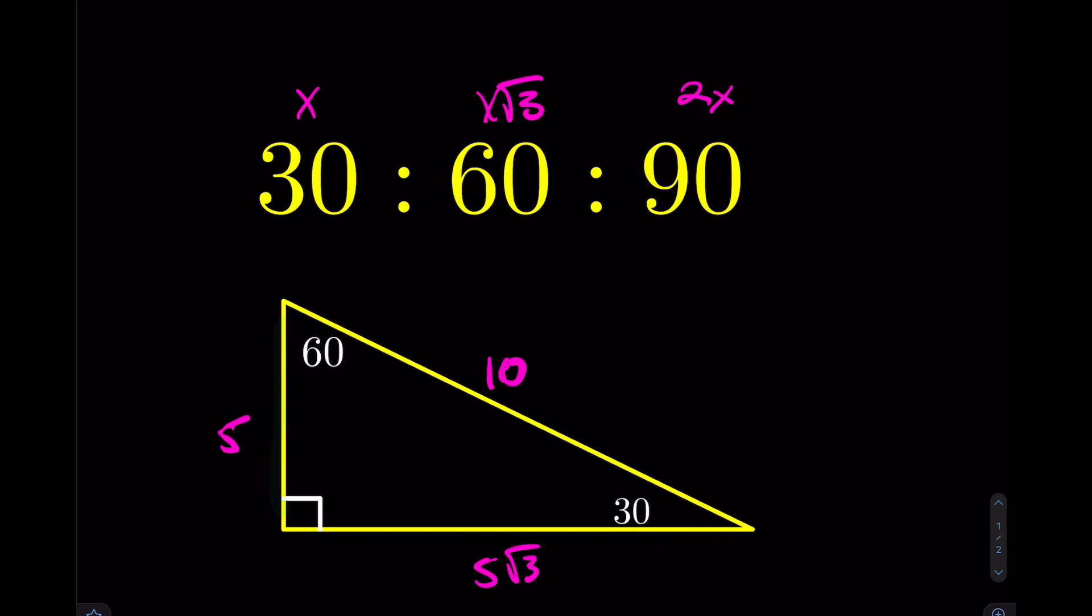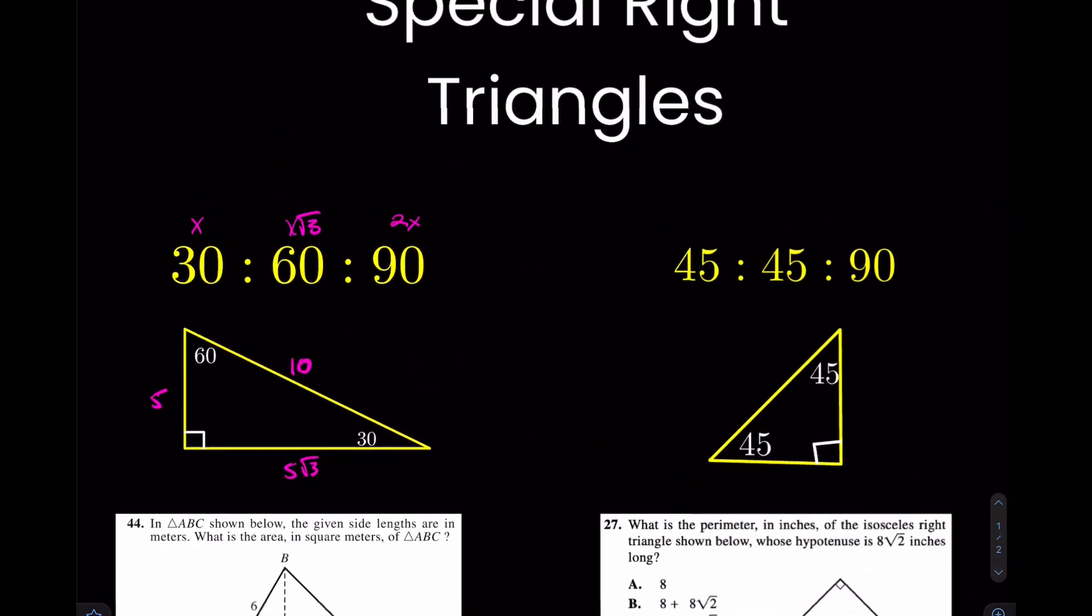Again, this side was 5, so the side opposite of the 90 is 10. Okay, cool. That's 30, 60, 90.